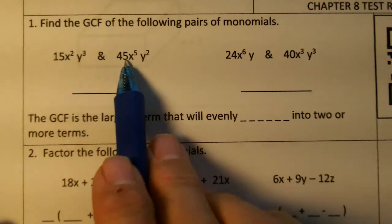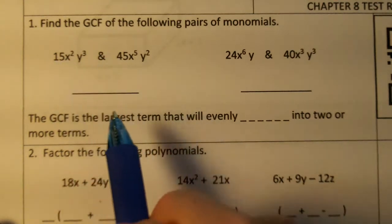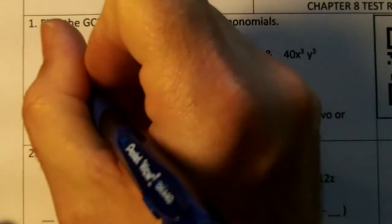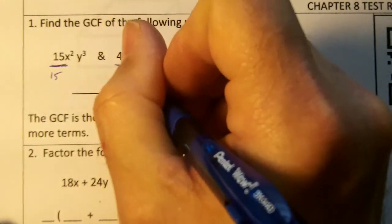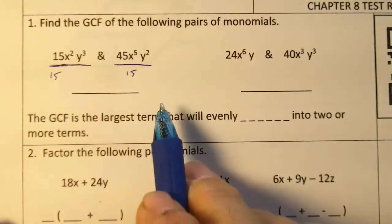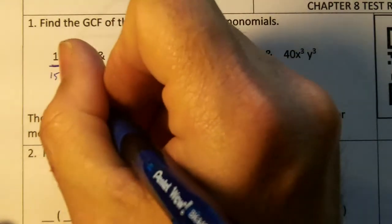The greatest common factor of 15 and 45 would be 15. You could divide both of these numbers by 15, can't you? So we know that we're going to have 15.